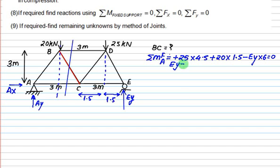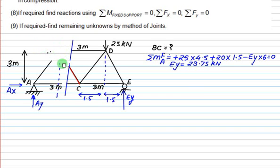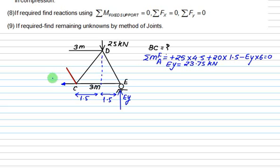After making the cut, the three members that are cut are BD, BC, and AC. We can use a reference point, but we will remove everything from the right-hand side. So we have three unknowns: BD, BC, and AC. And we have three governing equations: sigma Fx = 0, sigma Fy = 0, and moment = 0.